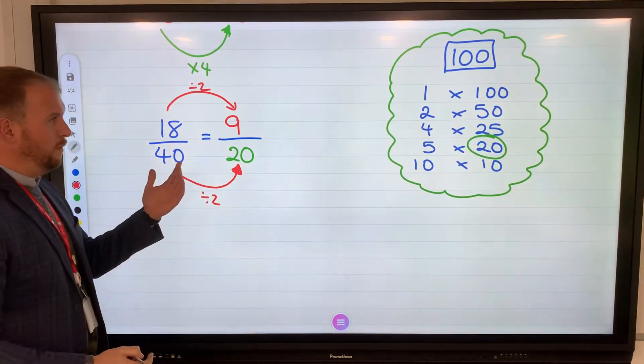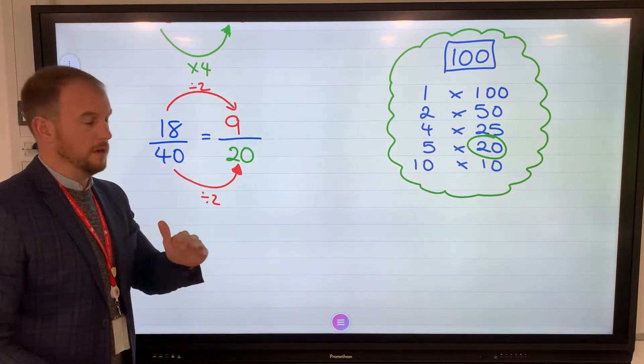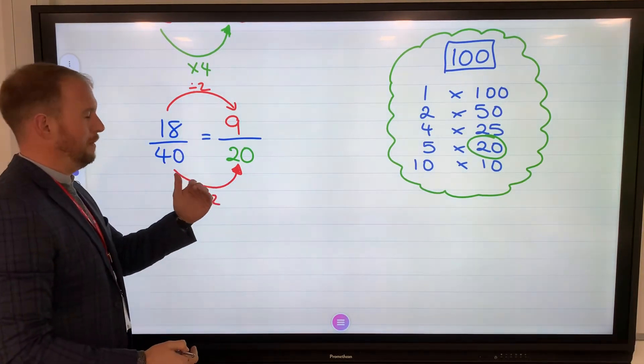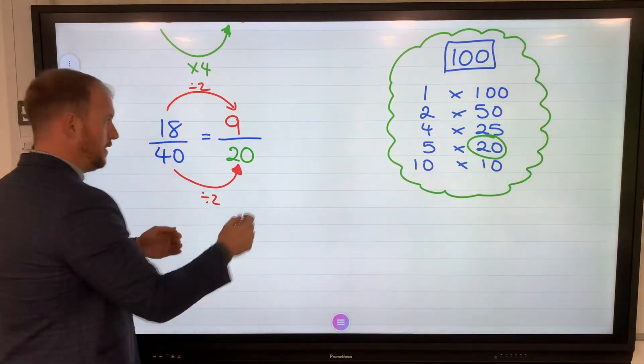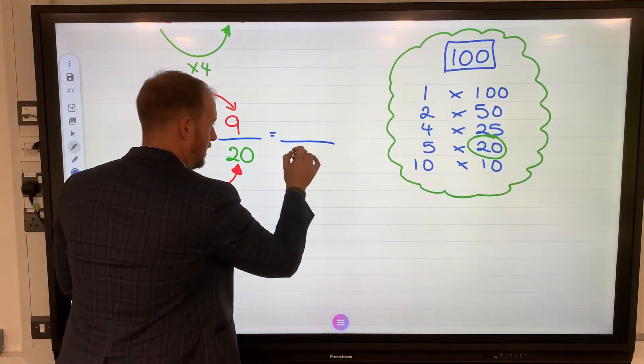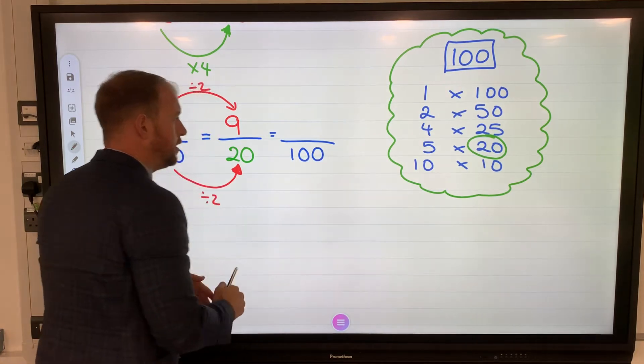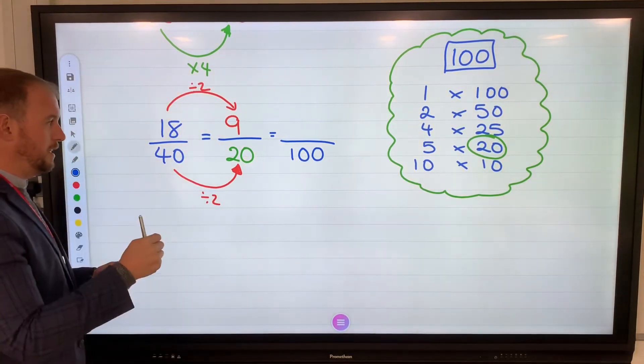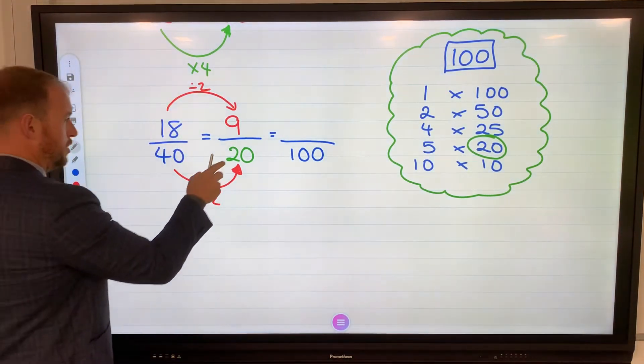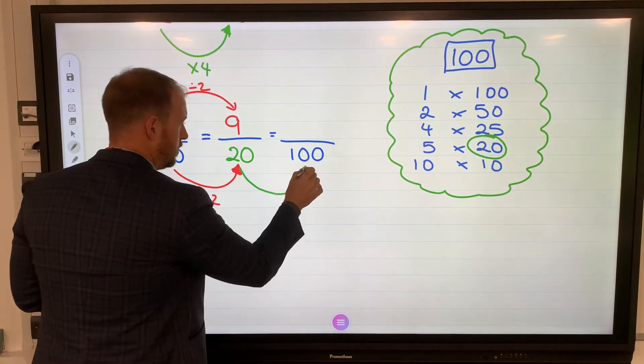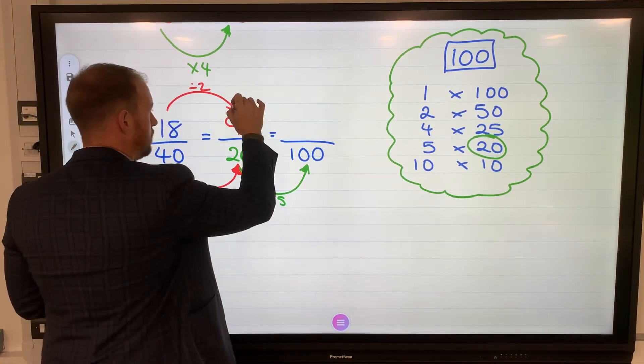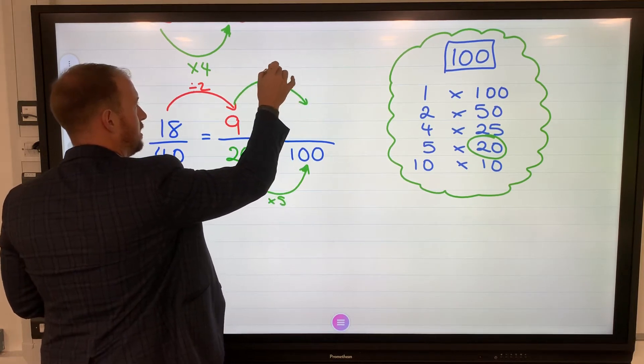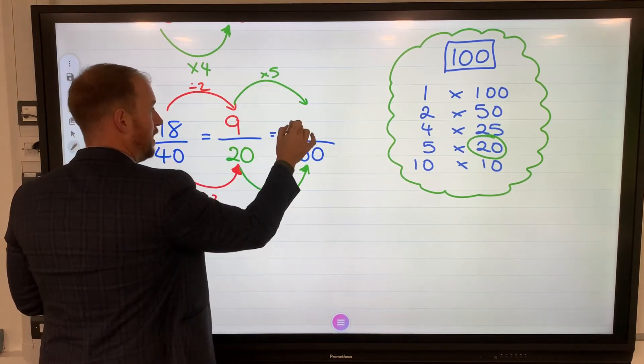So now I've made 9 out of 20. Now, we've gone further away from 100, and I can see why you might get a little bit confused with that, but I'm thinking ahead of the game. I need to get to the number 100 to express as a percentage. And I know to get from 20 to 100, we times by 5. And if I times that by 5, either 9 times 5 is 45.